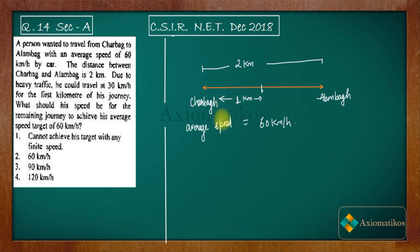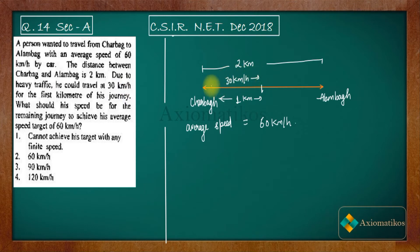It is given to us that up to 1 km distance — that is, from Charbagh to the midpoint — the vehicle is moving at 30 km per hour.